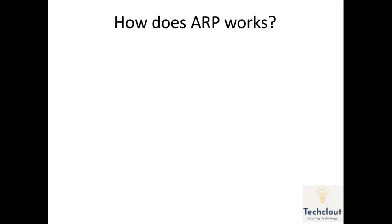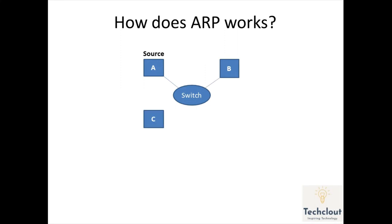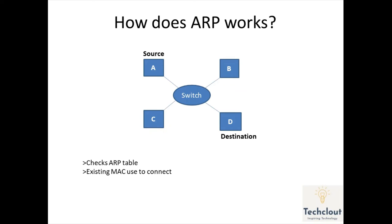Let's create a scenario. We have a switch, Computer A as the source, and Computer B, C, and D where Computer D is the destination. When a source device wants to communicate with another device, the source machine checks its ARP table. If it has the MAC address in the ARP table, it uses that for communication. If it does not have the MAC address or it is a new connection, it will broadcast an ARP request message on the local network.